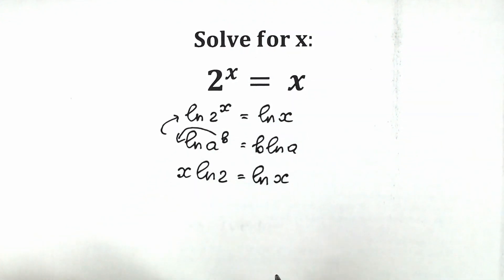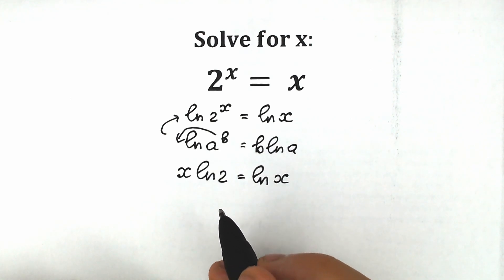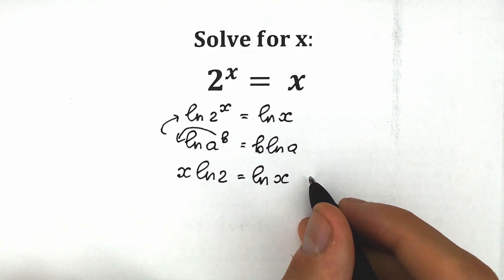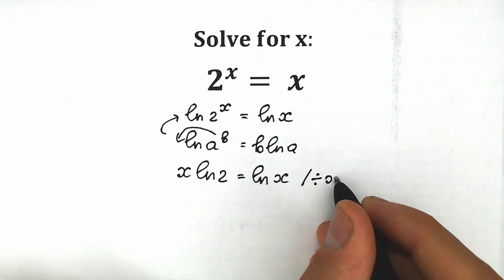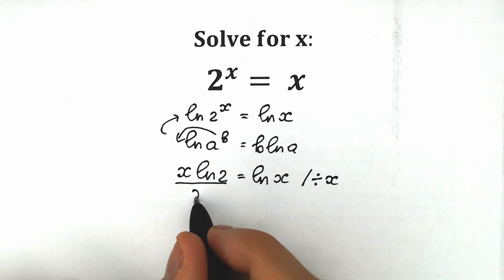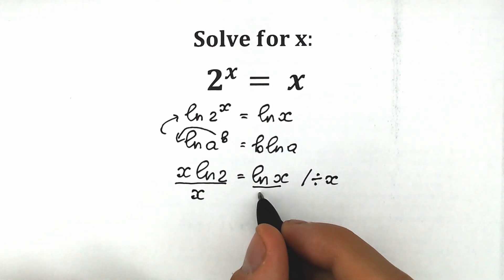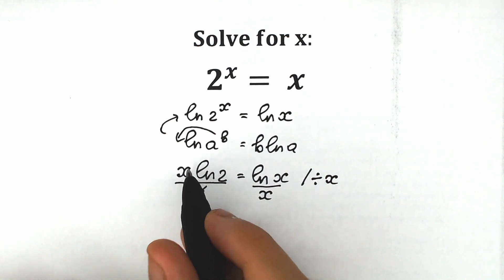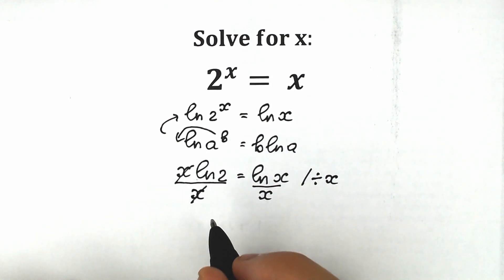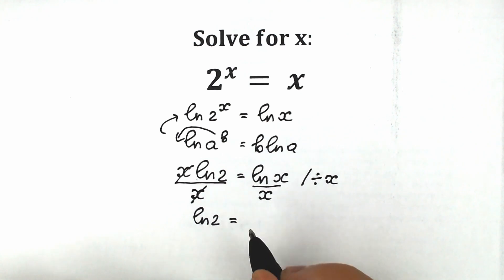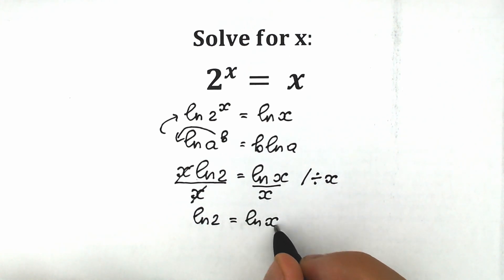Right now let's regroup, putting constants on the right side and variables on the left side. But first of all, let's divide both sides by x. When we divide both sides by x, we cancel x from the left side, and as a result we have natural log 2 on the left side equal to natural log x over x.